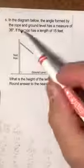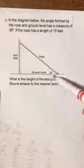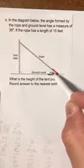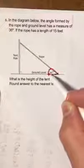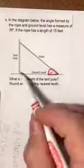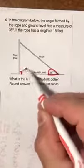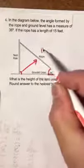Alright, so let's re-read if we have to. The rope and the ground level, the rope right here is forming this angle of 36 degrees. Now we identify the 90 degree angle here. This side opposite the 90 is the hypotenuse.